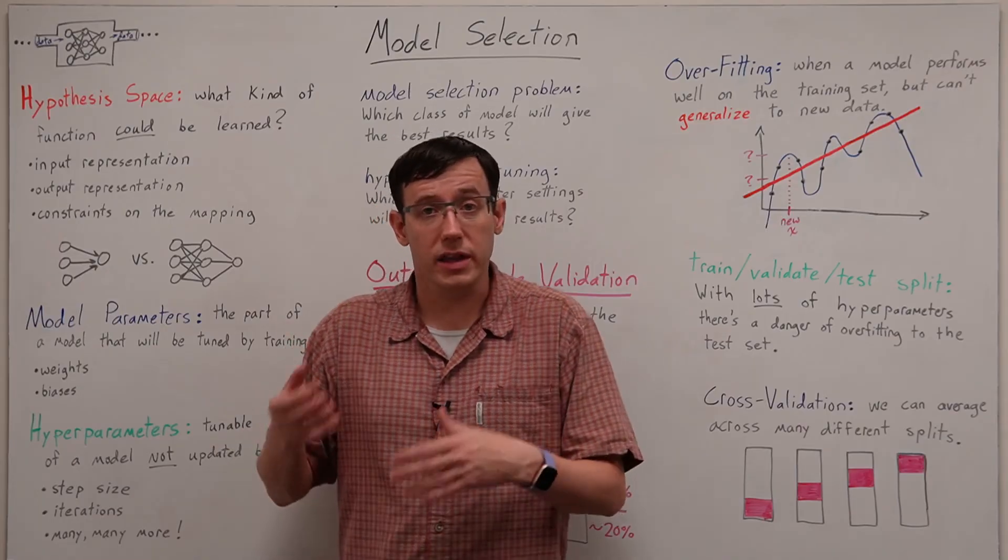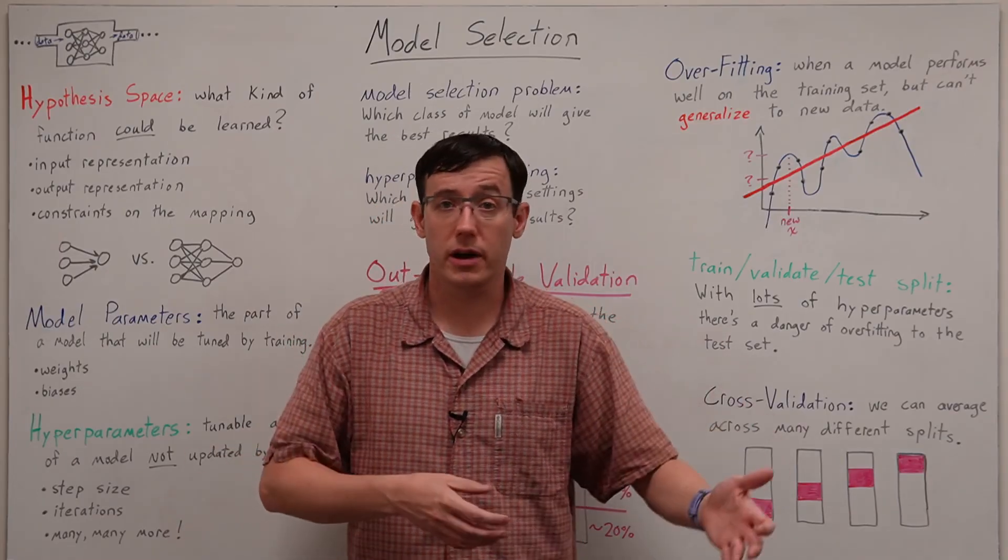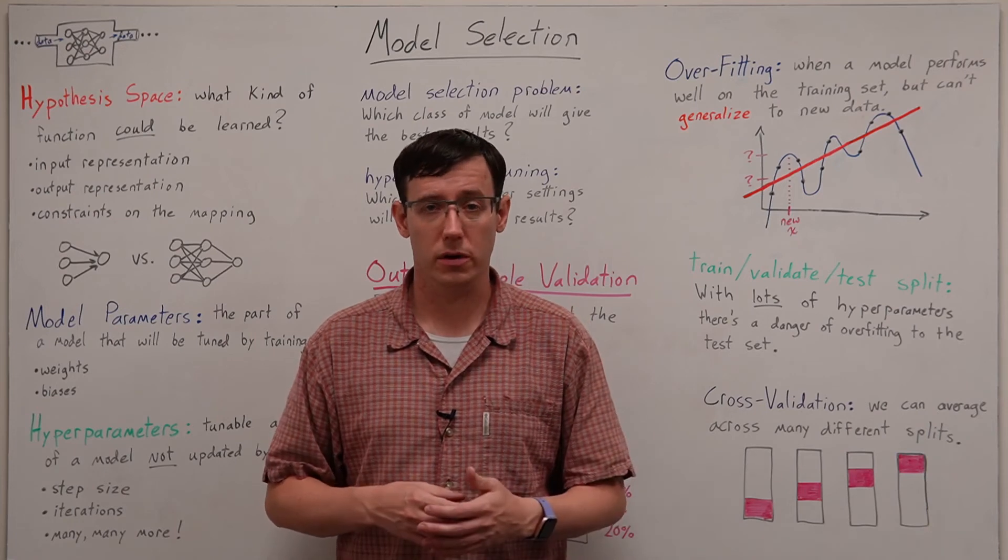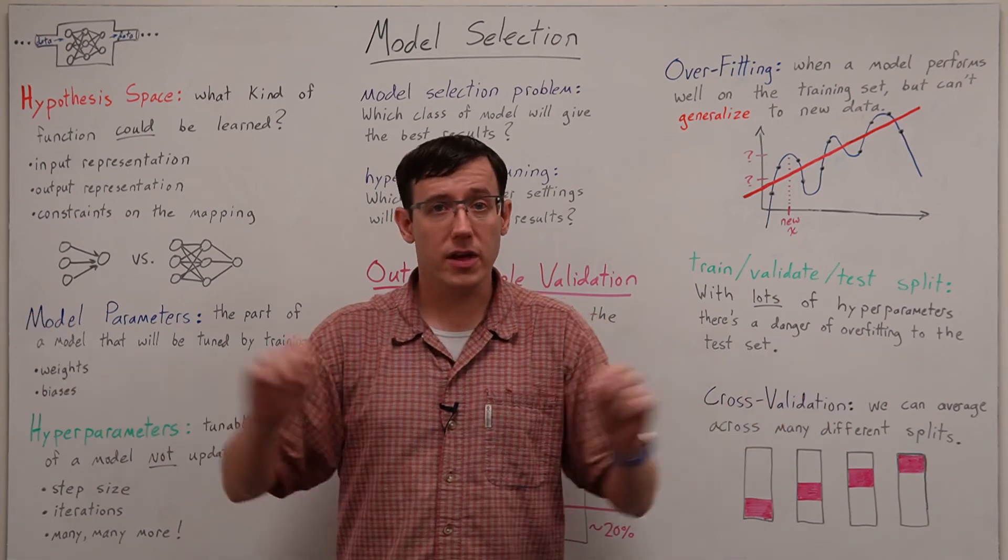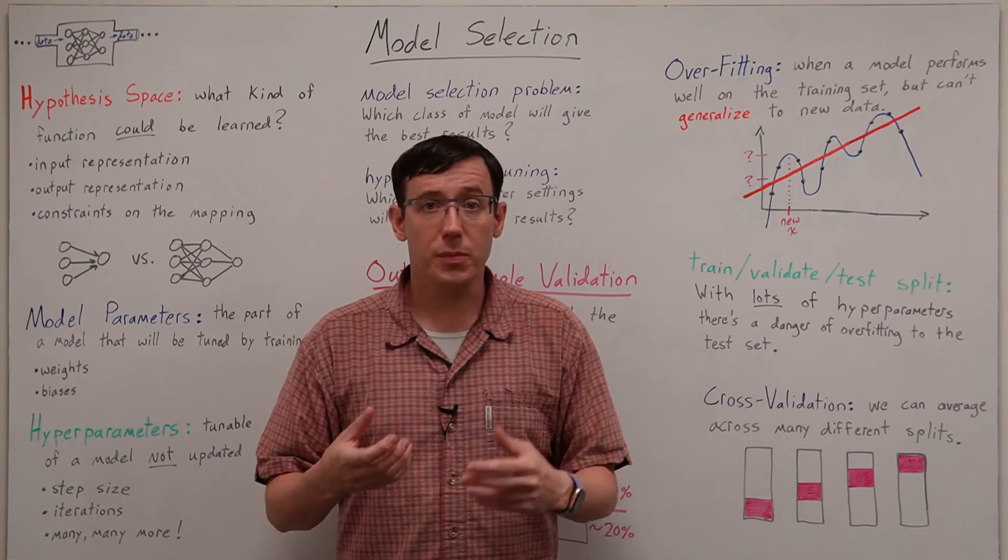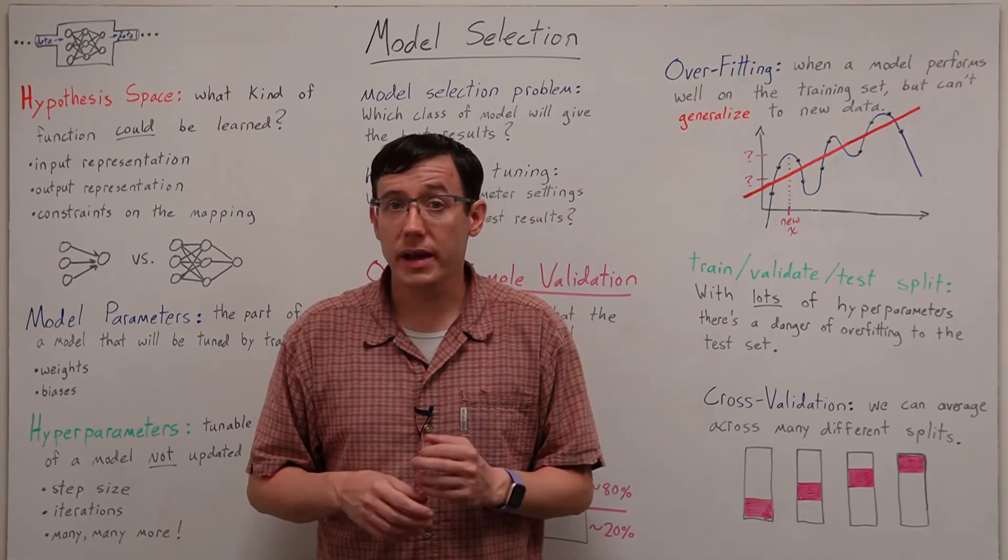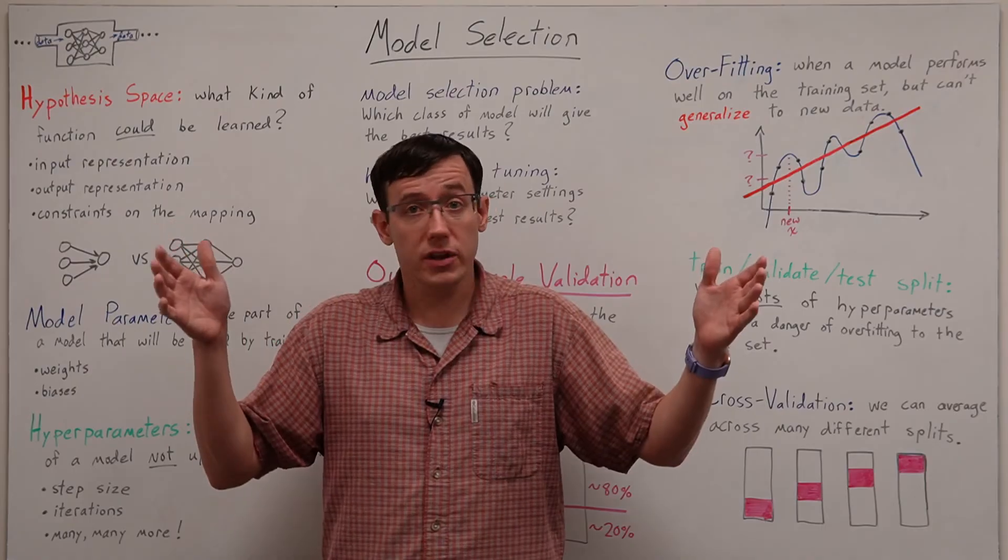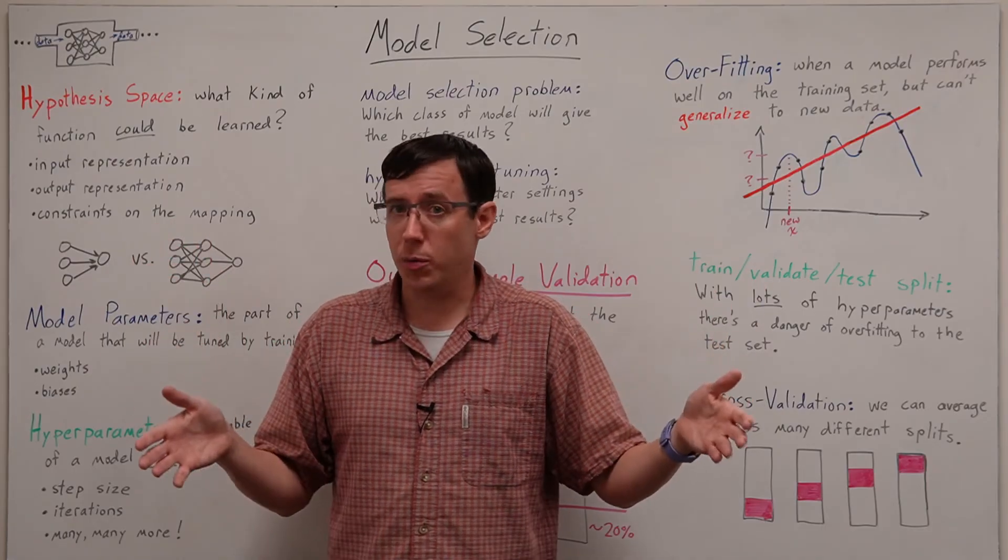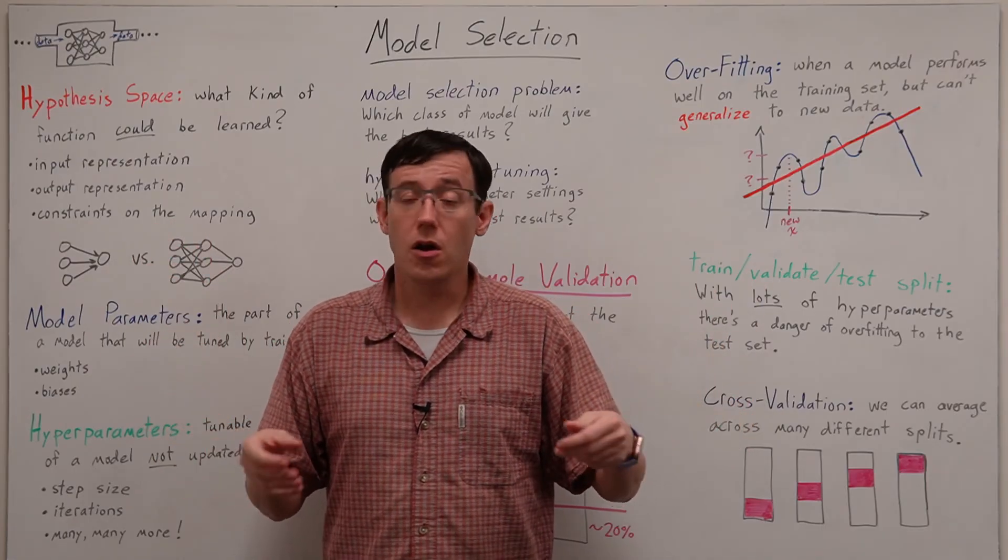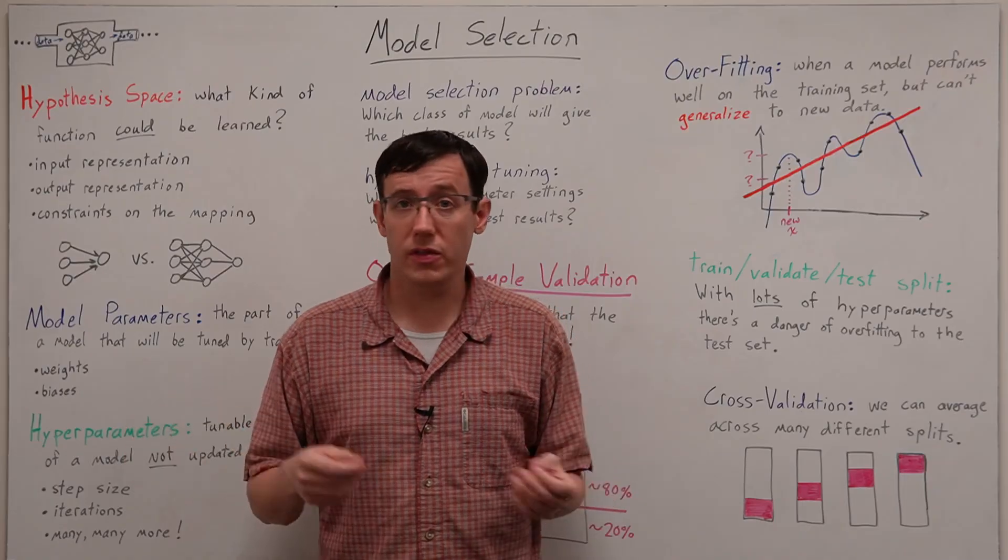But if we think the interaction of several different hyperparameters is going to be important then just varying them one at a time may not be enough to produce the best model. In which case my advice is to first establish the range for each parameter and then randomly choose from within that range.